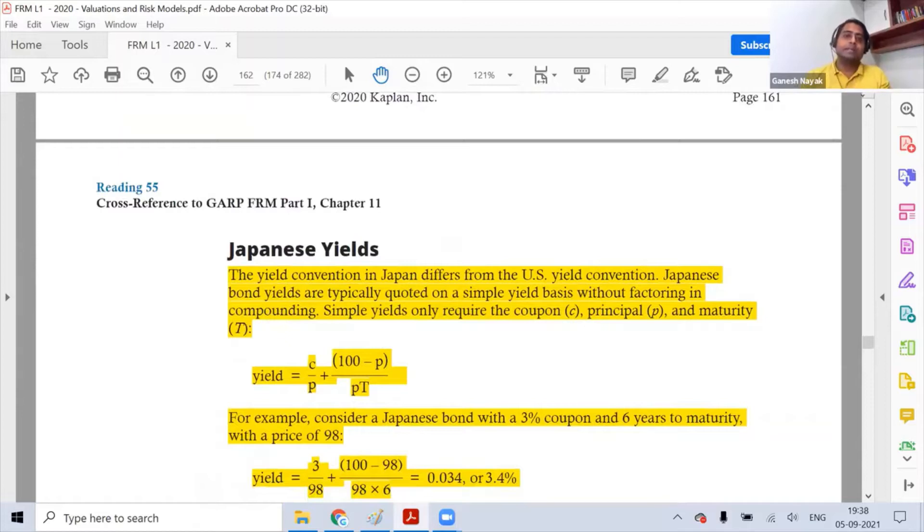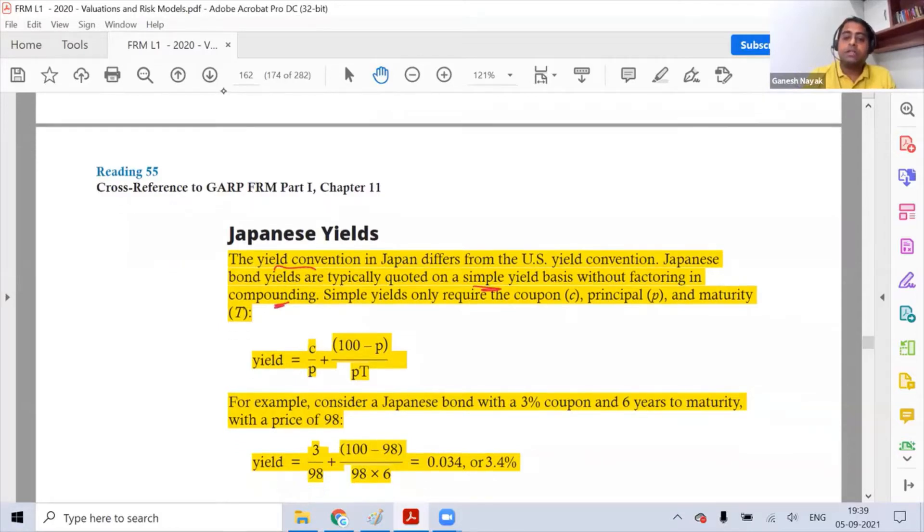Basically what they are doing is in the Japanese market there is something different that is happening which they wanted to highlight. In the Japanese market, the yield convention is very different. They are explaining and showing you on a simple basis—they are not taking into account compounding.